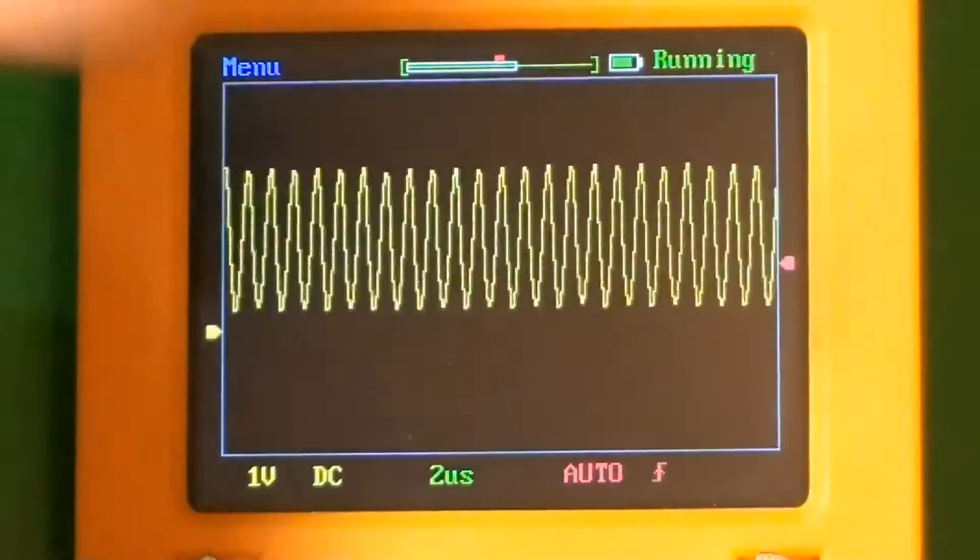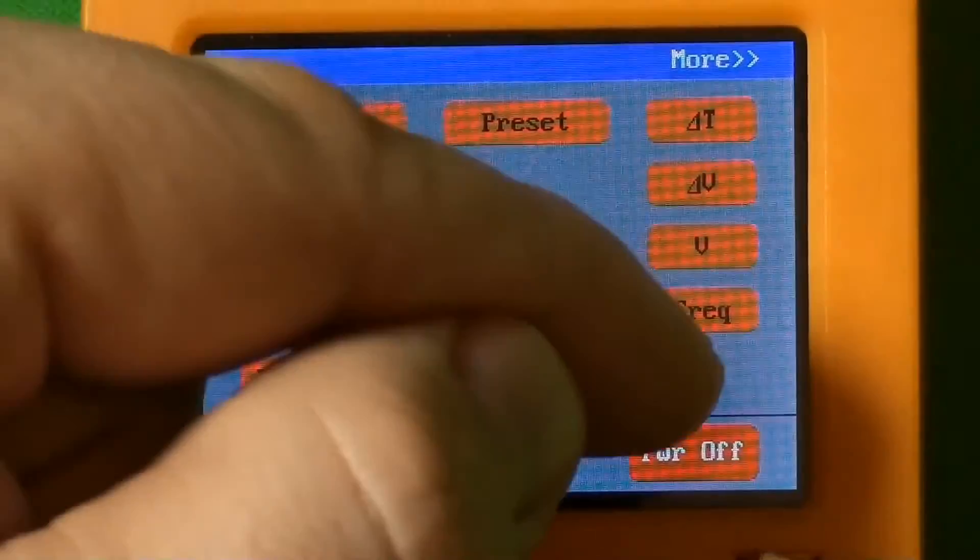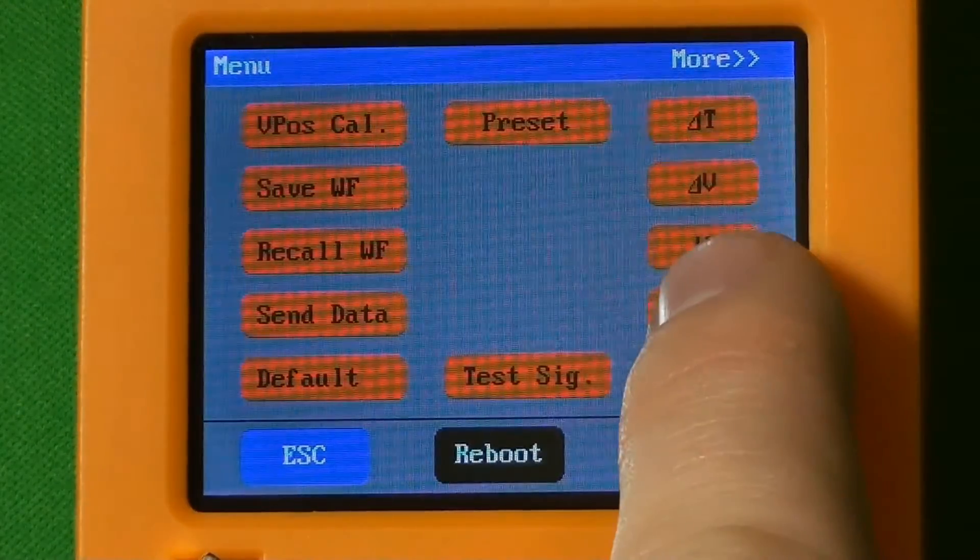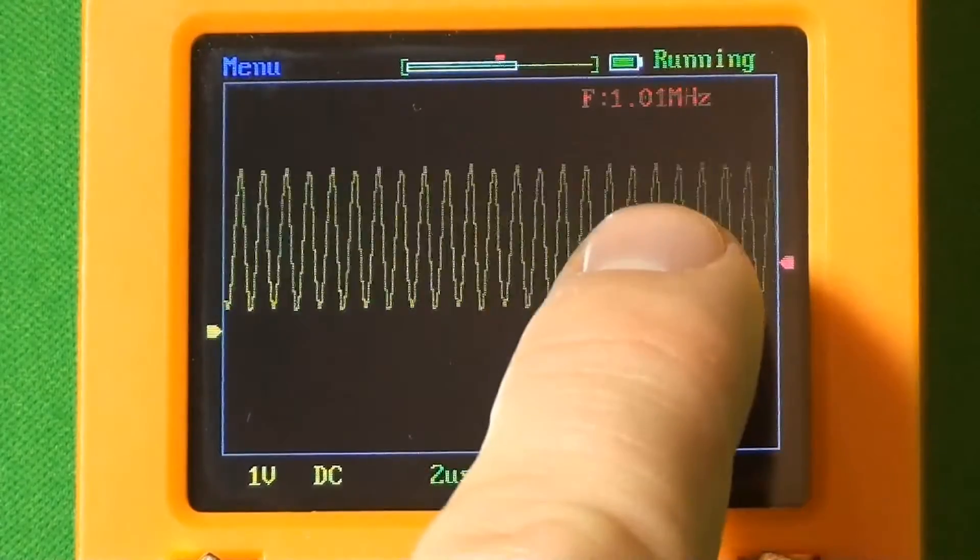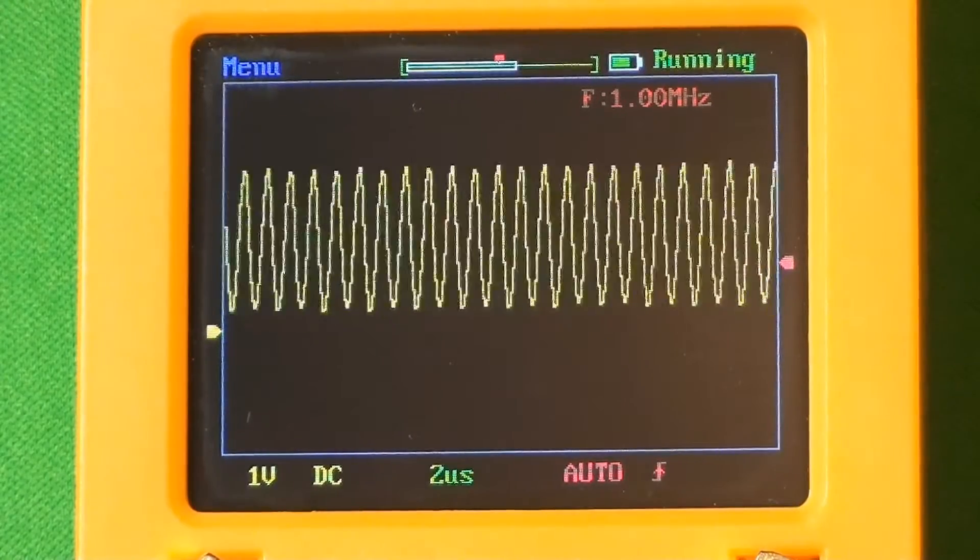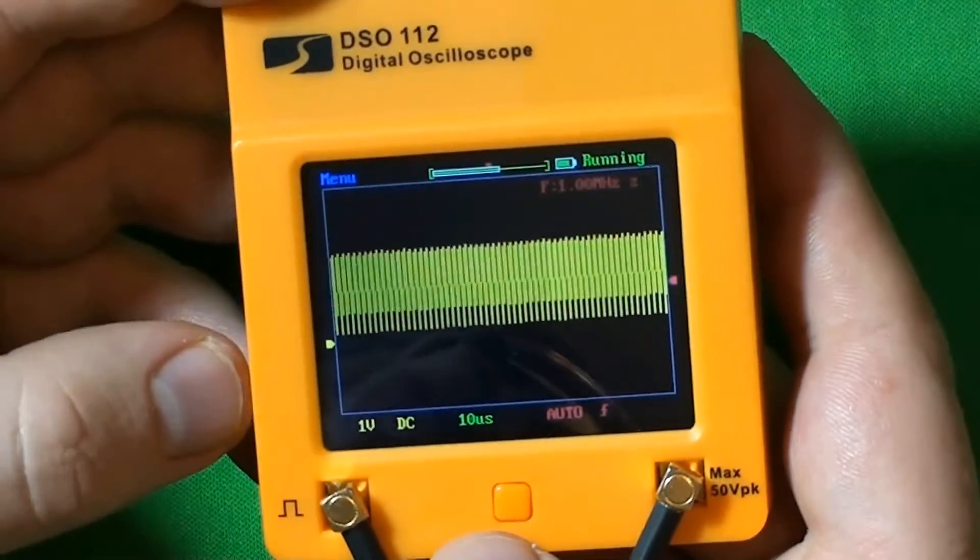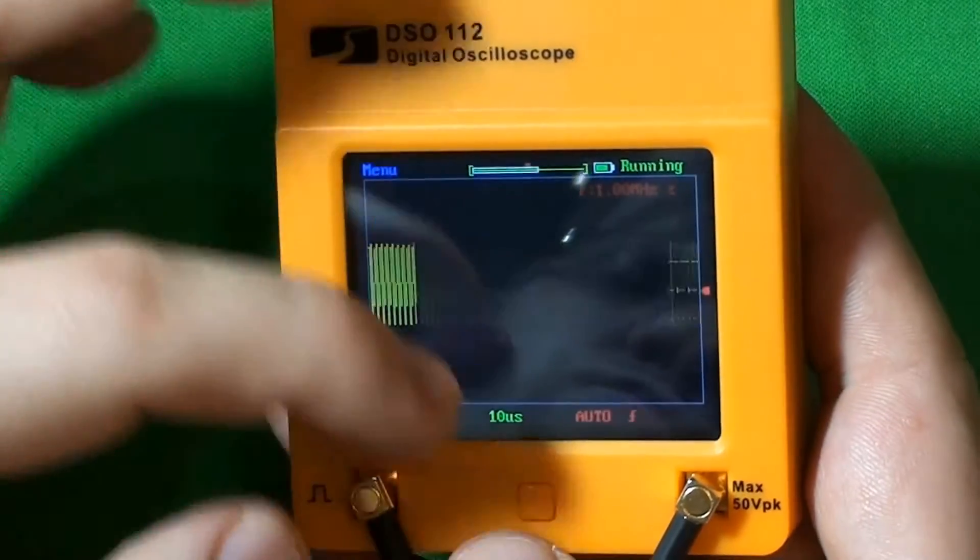You can also enable frequency measuring here in the menu, and we see 1 megahertz right here. If you happen to get this oscilloscope, I recommend downloading the most recent firmware from the manufacturer's website.